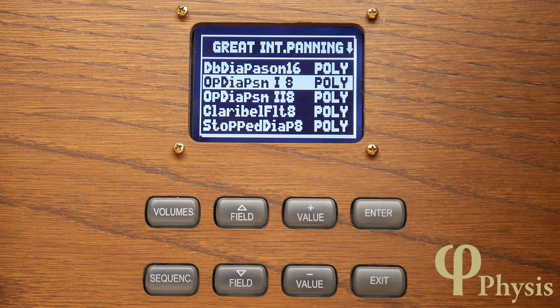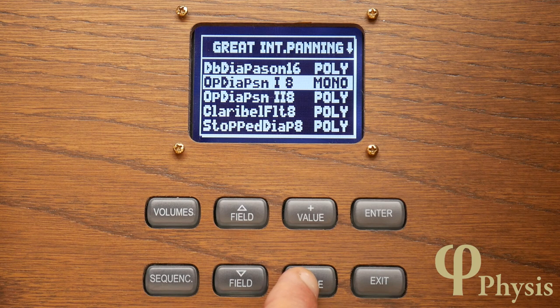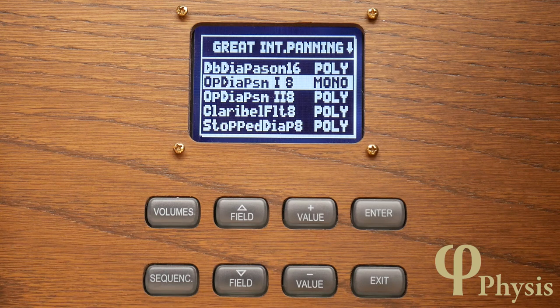Going down the list, the next option is Mono, which means that the voice is routed to both left and right channels of a pair, with the result that it appears to come out in the middle of the stereo image.